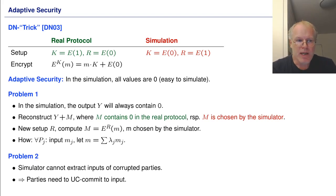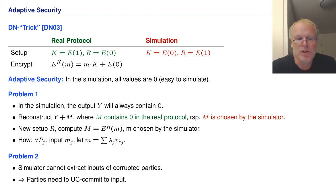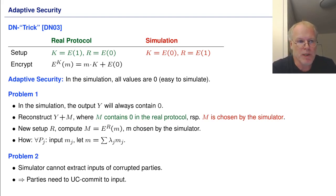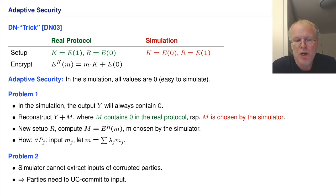There is a second problem. If all encryptions contain zero, then the inputs given by the adversary cannot be extracted — the simulator cannot find the inputs the adversary gives into the computation and so cannot pass them to the functionality. This can be solved by adding a UC commitment to the input stage: a party providing an input must not only provide an encryption with respect to k, but also UC-commit to that input and prove in zero knowledge that the commitment contains the same value as the encryption.